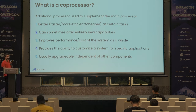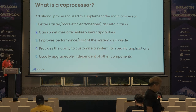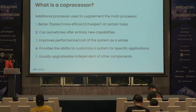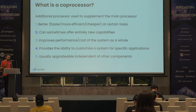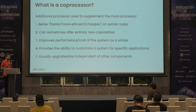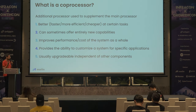Traditionally a co-processor is like an additional processor that goes to really supplement your field processor. An example would be like a GPU for your CPU. And it's usually better at a certain task than the CPU — like it's either faster, cheaper, or more efficient. You can sometimes offer entirely new capabilities. For example, your phone probably has an independent network card which enables you to talk to the mobile networks, which your CPU can't really do.